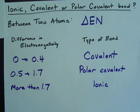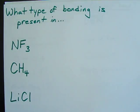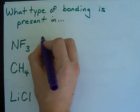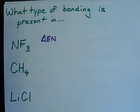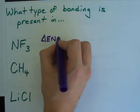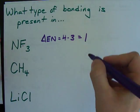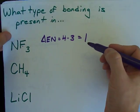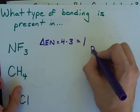But let's see how we can actually use this information. What type of bonding is present in NF3? Well, the difference in electronegativity between nitrogen and fluorine is 4 minus 3. So that turns out to be 1. If the difference in electronegativity is 1, it is a polar covalent bond.